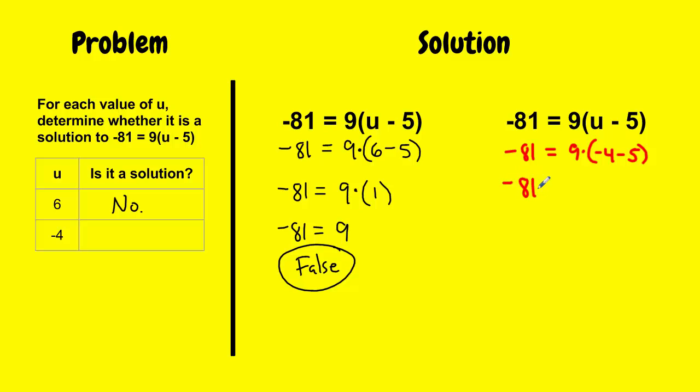So I'm going to do negative 81 equals 9 times. And then simplify in the parentheses. I get negative 9. So I get now negative 81 is equal to 9 times negative 9 is negative 81.